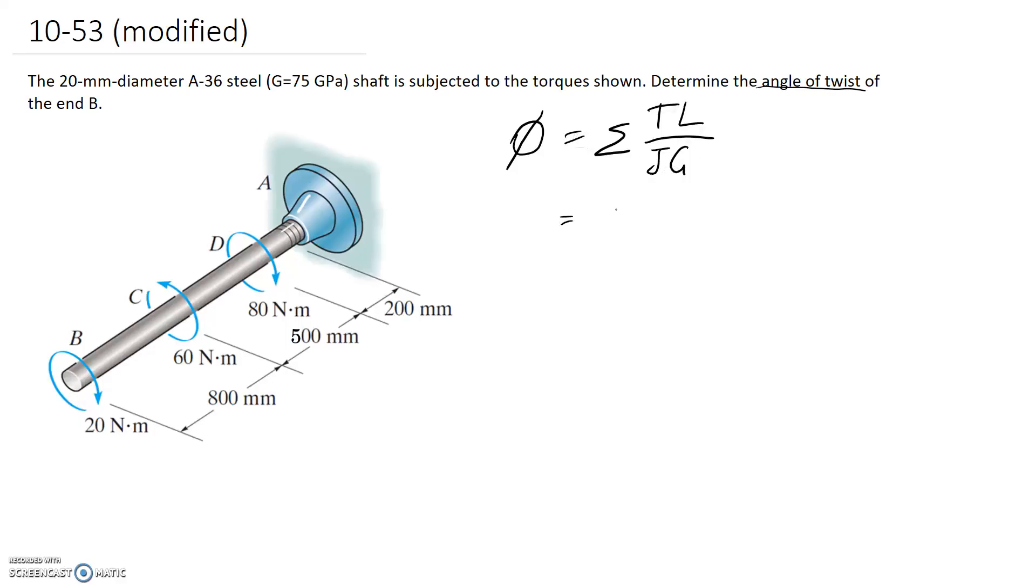I could rewrite this in terms of those three sections. TL on JG for the first section BC, plus TL on JG for the next section CD, and then one last one for section DA. T in this equation is the torque applied through the section, so we need to determine that. There are two different methods: draw a free body diagram and perform cuts through each section to find the internal torque, or draw a torque diagram and read off the torque for each section.